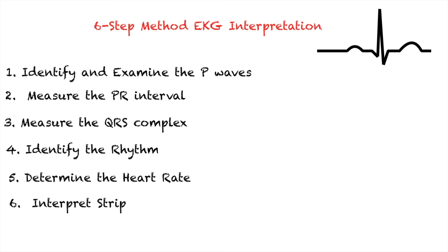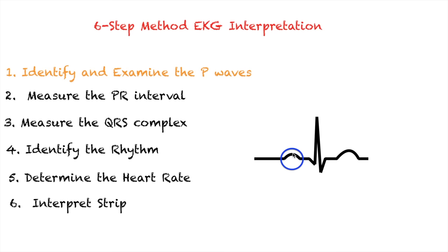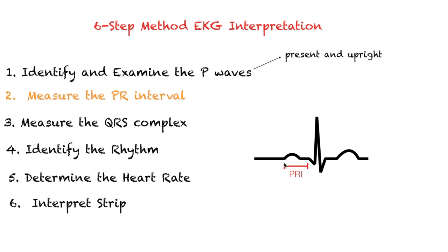Step one: identify and examine your P waves. The normal P wave should be present and upright. If the P wave is absent or inverted, it could indicate a form of dysrhythmia, such as a junctional rhythm. Step two: measure the PR interval — the distance between the beginning of the P wave and the beginning of the QRS complex. Count the number of small boxes in between and multiply by 0.04 seconds. The normal PR interval is 0.12 to 0.20 seconds. Anything more than 0.20 seconds could indicate a dysrhythmia such as a heart block.